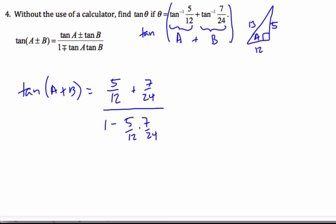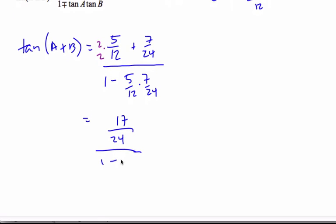And so if we do some fractional work here, I'm going to multiply it times 2 over 2. Let me just think about this as we do some crunching here. So here I'll get 10 plus 7 is 17 over 24, over 1 minus 35 over 12 times 24.